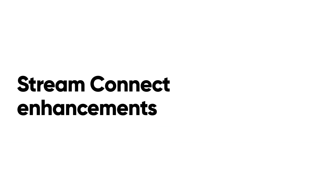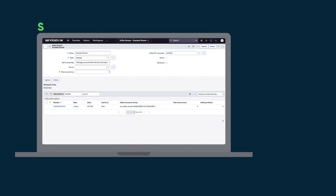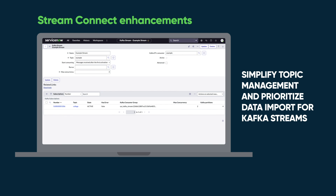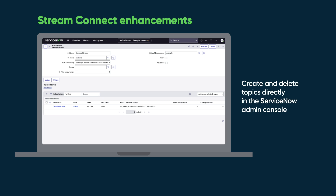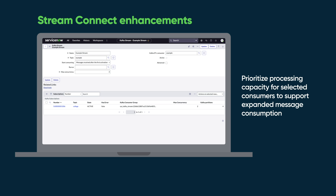Stream Connect Enhancements: Simplify topic management and prioritize data import for Kafka Streams. Create and delete topics directly in the ServiceNow admin console. Prioritize processing capacity for selected consumers to support expanded message consumption.